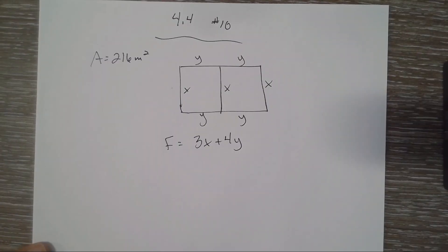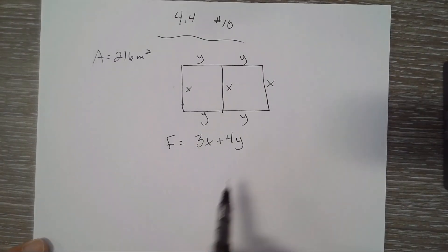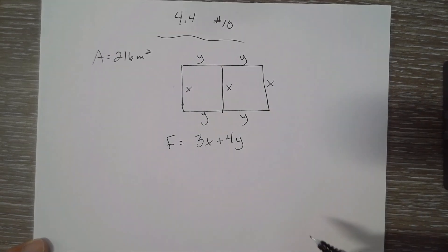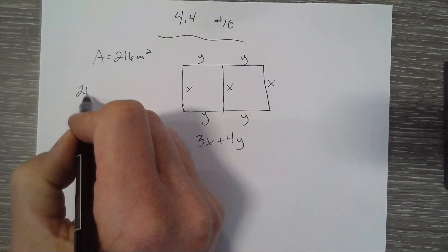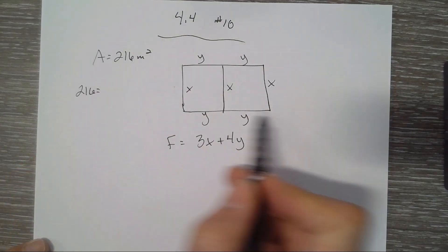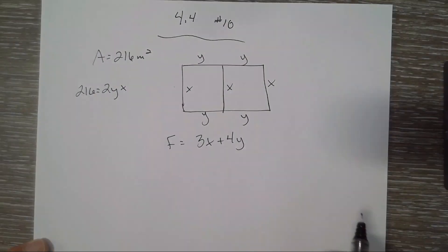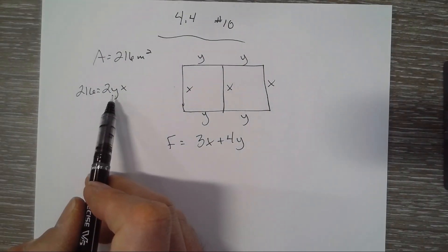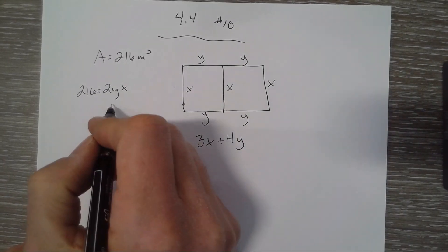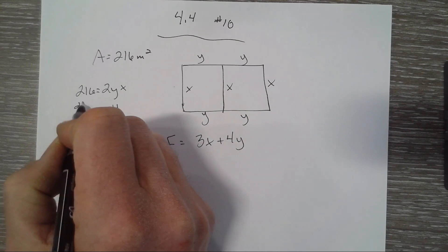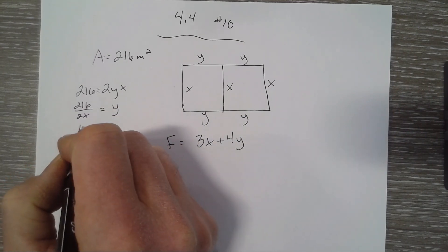And we have too many variables and we have not included the 216. So we want to get it down to one variable. If the area is 216 base times height, so 216 is going to equal 2y times X. So we can either write that in terms of Y or in terms of X. So why don't I solve for Y? So Y would be 216 over 2x. So Y would be 108 over X.